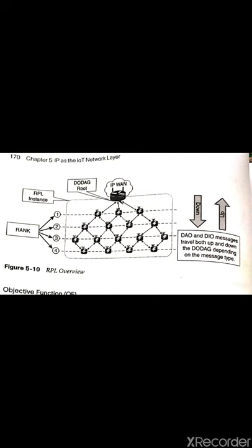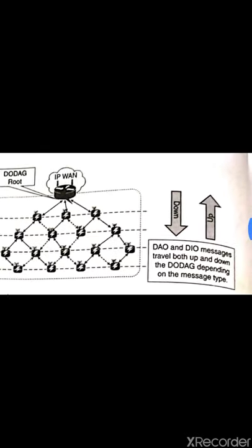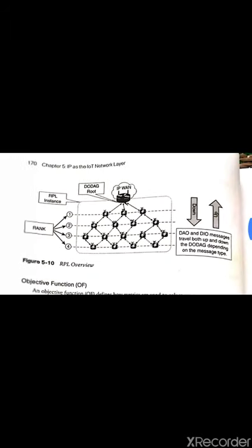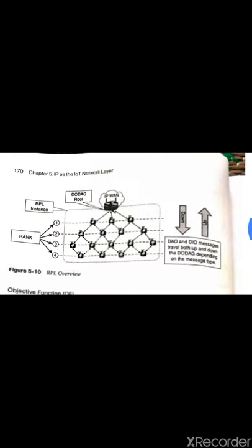These are the messages—upward messages and downward messages, upward routes and downward routes. You can see here DAO and DIO messages move both up and down the destination-oriented DAG, depending on the message type. This is the RPL overview.